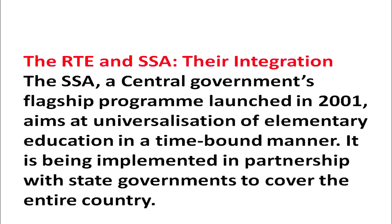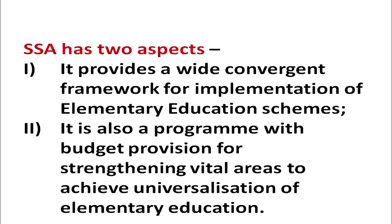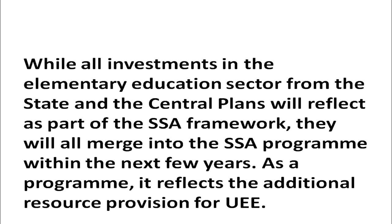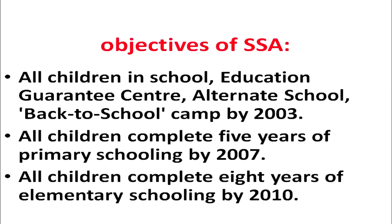The SSA, a central government's flagship program, was launched in 2001, with the aim of achieving universal elementary education in a time-bound manner, implemented in partnership with state governments. SSA has two major aspects: it provides a wide covering framework for implementation of elementary education schemes, and it is a program with budget provisions for strengthening vital areas of achieving universalization of elementary education. While all investments in the elementary education sector from state and central plans reflect as part of SSA framework, they will merge into the SSA program within the next few years. As a program, it reflects additional resource provisions for UEE.